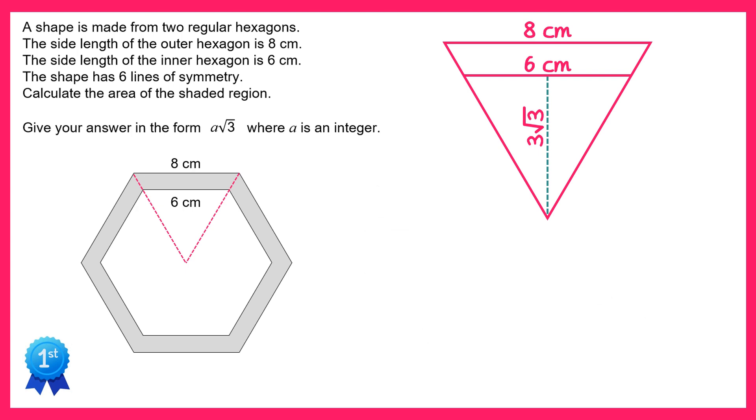Now that we have this length, we can find out the area of the inside triangle here. We can do that using area equals one-half times the base which is six times the perpendicular height which is three root three, and this will give you nine root three. So the area of this inner triangle is nine root three.